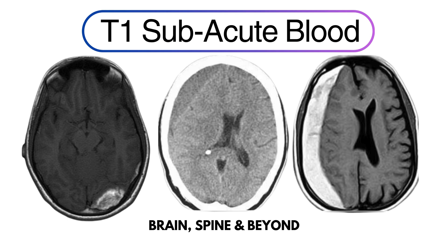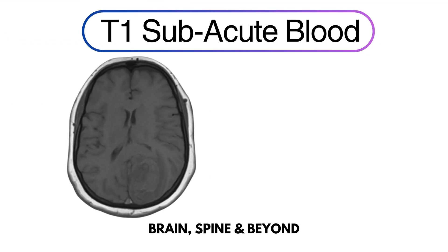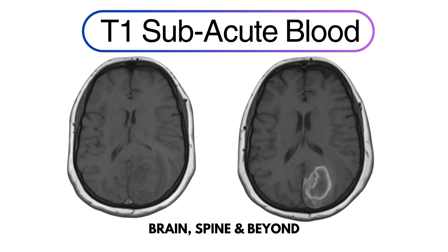You might argue that life is not that easy — and I would agree. This T1 shows an iso-intense part, meaning this is acute blood. But as we do the scan a few weeks later, it looks bright on the outside and iso-intense on the inside. As you are now an expert in T1 signals of blood, you can say the blood is aging and showing different intensities.